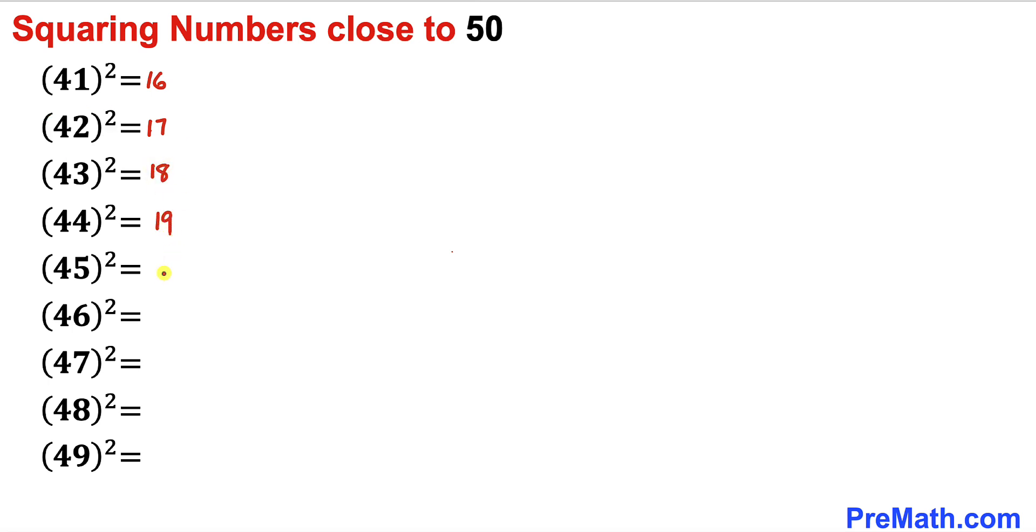We're going to keep adding 1 as we go down, so therefore the next number is going to be 18, 19, 20, 21, 22, 23, and 24.